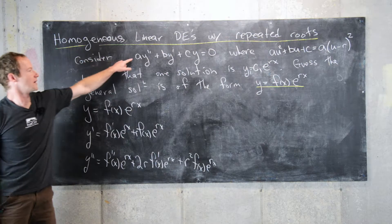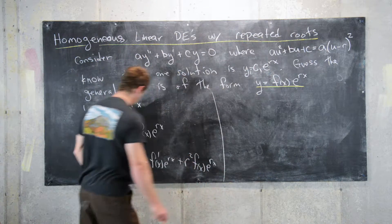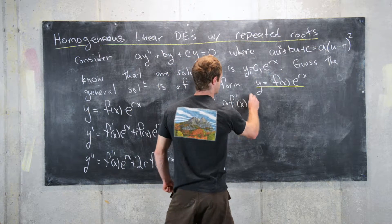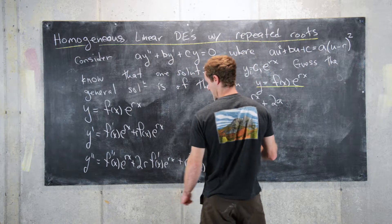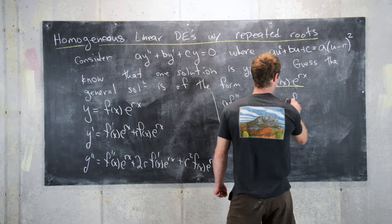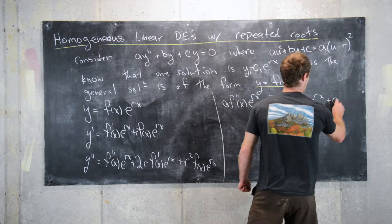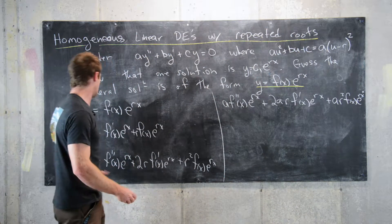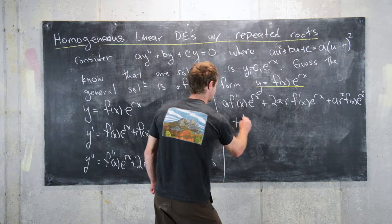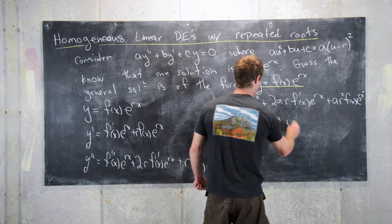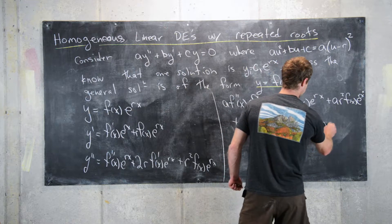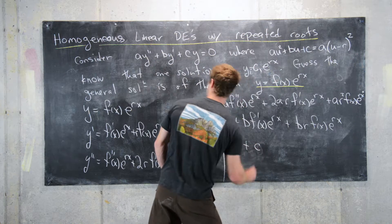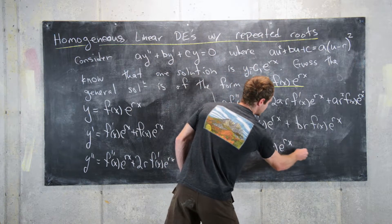So, now, what we want to do is combine these together as per the differential equation. So, a times y double prime gives us a·f double prime of x·e to the rx plus 2ar·f prime of x·e to the rx plus ar squared·f of x·e to the rx. Our second term is b times y prime: b·f prime of x·e to the rx plus br·f of x·e to the rx. And finally, c times y: c·f of x·e to the rx. So, all of this is equal to 0.